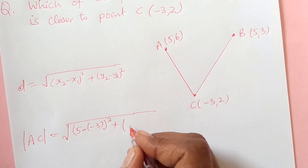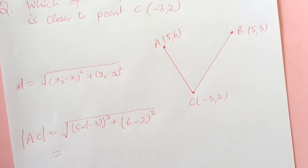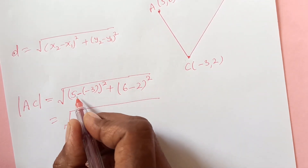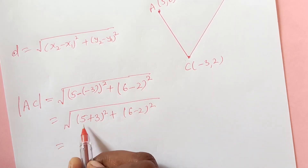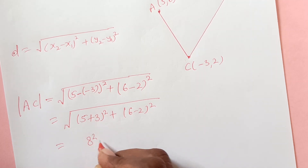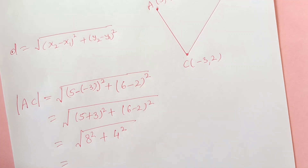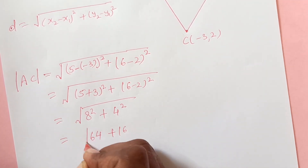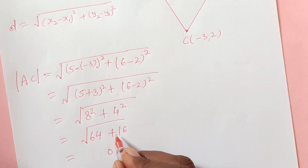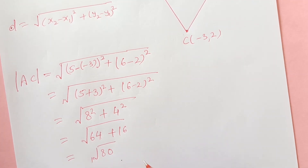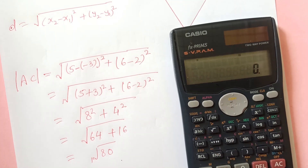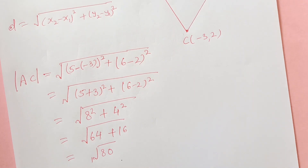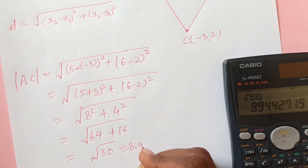Y2 is 6 minus 2, then squared. So: 5 minus (-3) — the minus and minus become plus — so this is (5 plus 3) squared plus (6 minus 2) squared. 5 plus 3 is 8, squared is 64. 6 minus 2 is 4, squared is 16. So 64 plus 16 equals square root of 80 units. We can find it in decimal — square root of 80 is approximately 8.94 units.